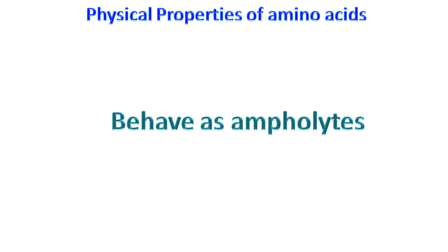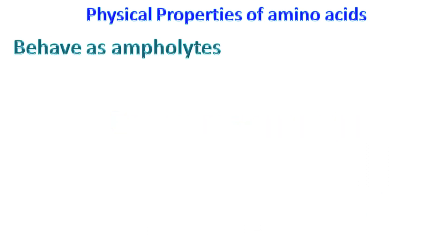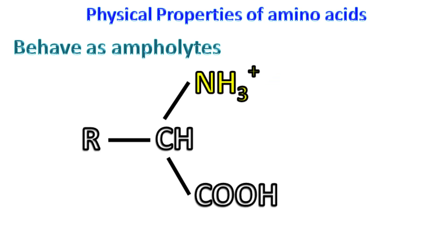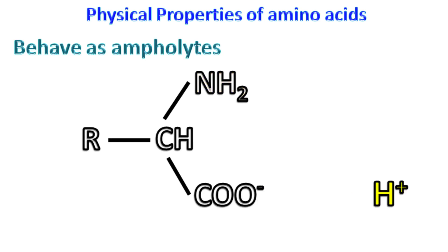Amino acids behave as ampholytes. The amino group of the amino acid has a tendency to accept H+ and become NH3+, while the carboxyl group of the amino acid has a tendency to donate H+ and become COO−.